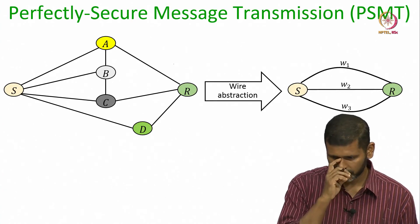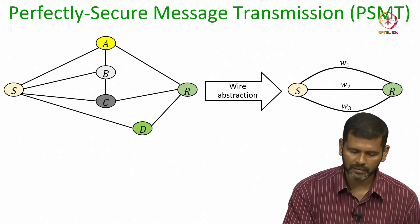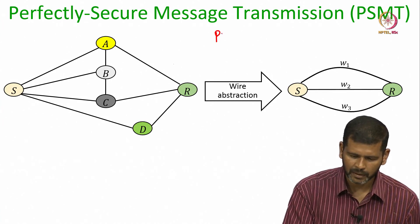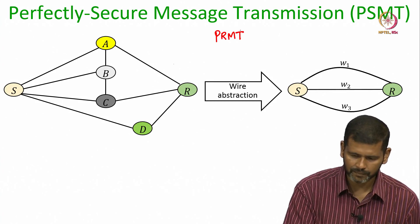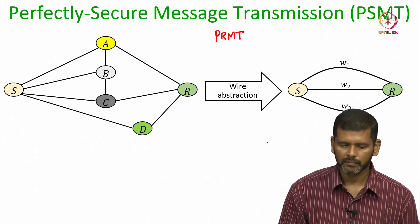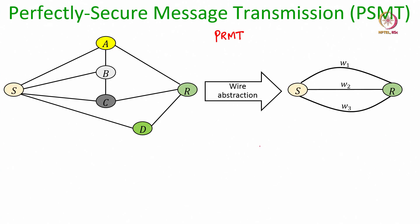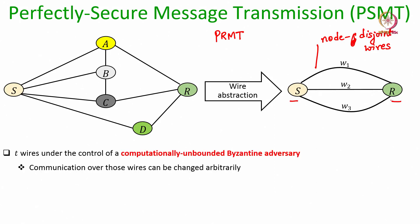This PSMT problem, the perfectly secure message transmission problem, is a variation of the PRMT problem which we had discussed in the earlier lecture. In that problem we had abstracted the underlying network as a collection of node disjoint wires between two parties, a sender and a receiver, and up to T wires could be under the control of a computationally unbounded byzantine adversary where the communication over those wires can be arbitrarily changed.